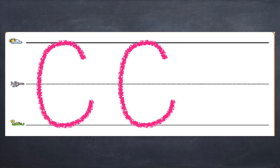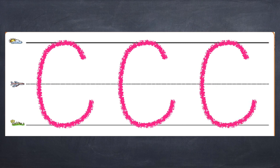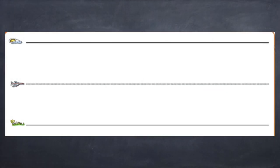One more time — starting under the skyline, go up, around, curve down to the ground line, and curve up. Nice job. Let's practice our lowercase C. Our lowercase C looks just like our uppercase C, and we'll write it pretty much the same way, but this time we'll start at the airplane line. So we'll start under that airplane line and go up just to touch it, then down and up a little bit.